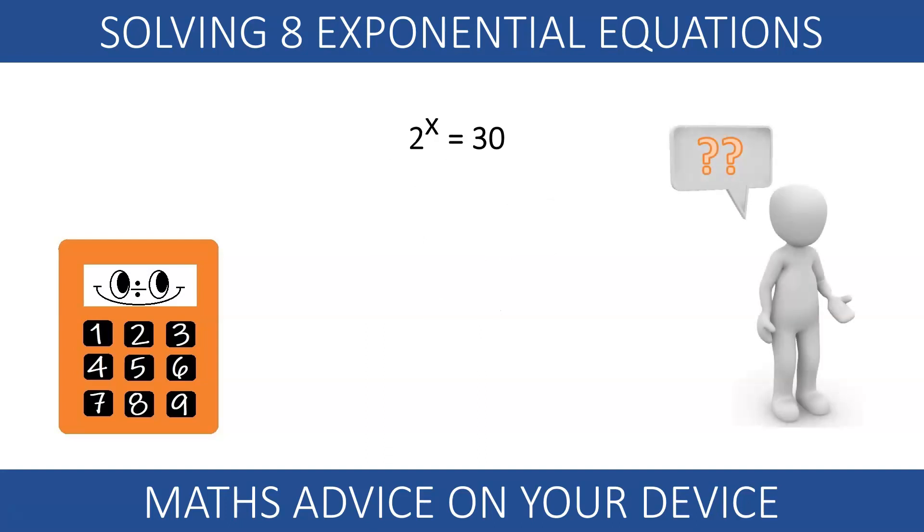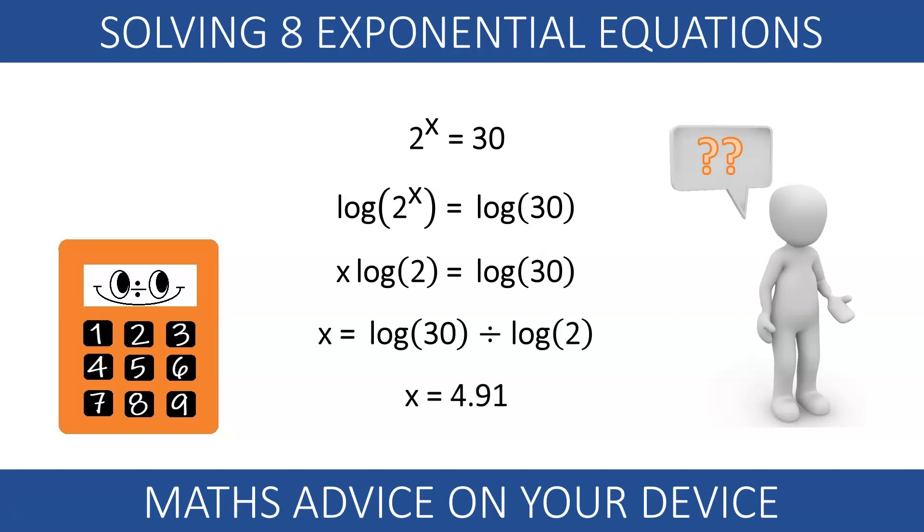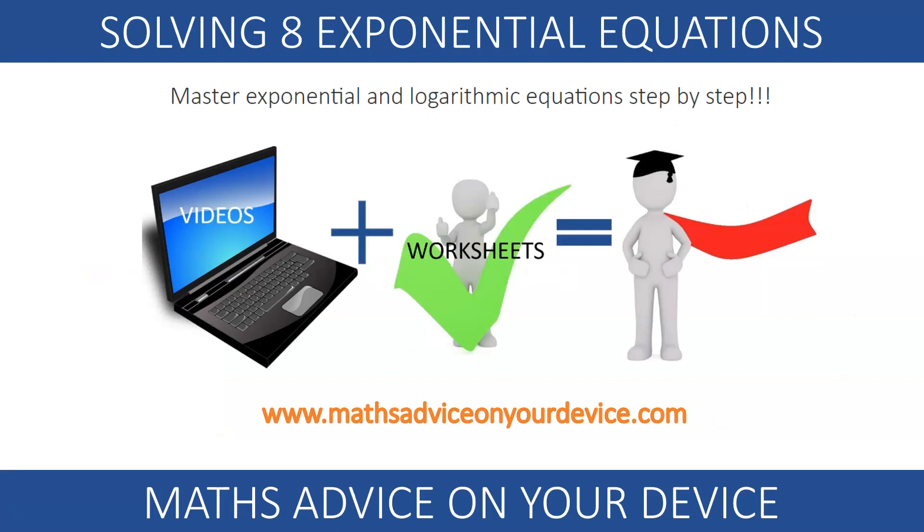In this equation, we face a difficulty. 30 is not a power of 2. We need to use logarithms. Once you cover this concept and learn what a logarithm is and how it works, you will understand why applying logarithms converts this exponential into a linear equation. Easy to solve. This is what we do step by step.